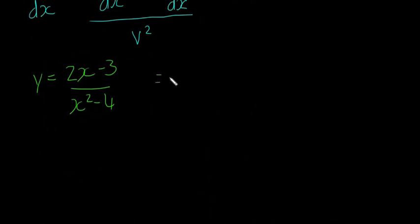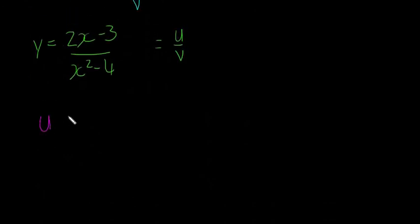So this is in the form u over v, so we have our thing on top, our u, divided by our x on the bottom, which is going to be our v, and we're going to write these out just like we did in the last question. So u equals 2x minus 3, and v equals x squared minus 4.